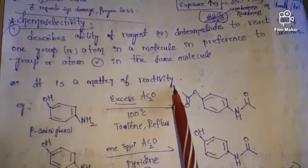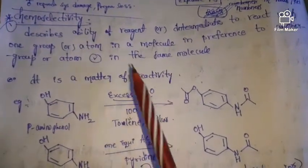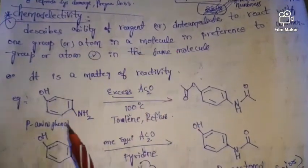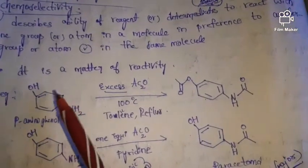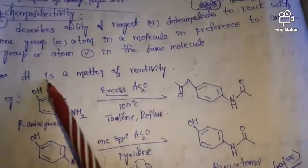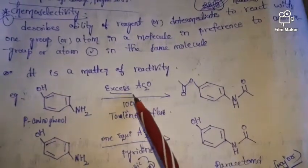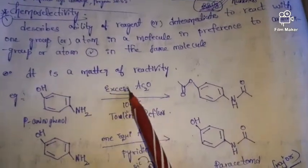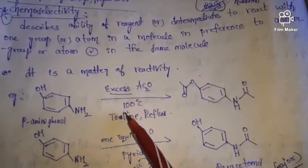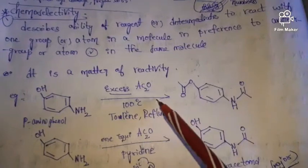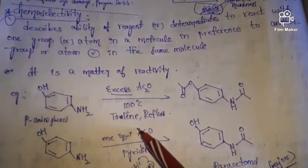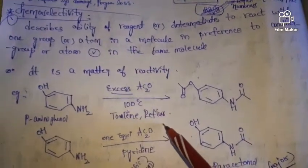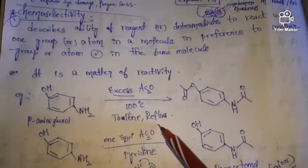Let us apply this concept. Here we have para-aminophenol reacting with excess of acetic anhydride at 100 degrees centigrade in toluene with reflux. Reflux means heat.